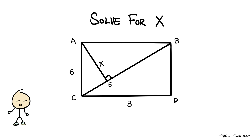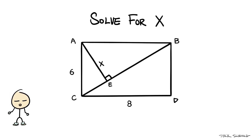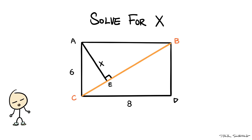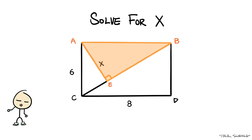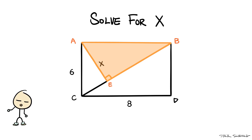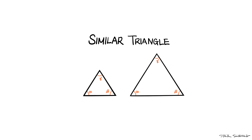If you're listening to this, you're probably stuck after using the Pythagorean Theorem to successfully determine the length of the diagonal line BC. Here's the hint: triangle ABE is a similar triangle to another triangle that can be found in our rectangle. A similar triangle is one that is different in size but consists of the same angles. Find this triangle and you find X.